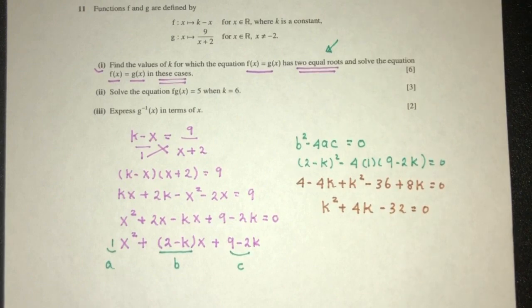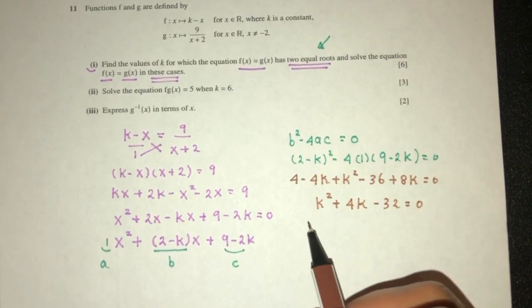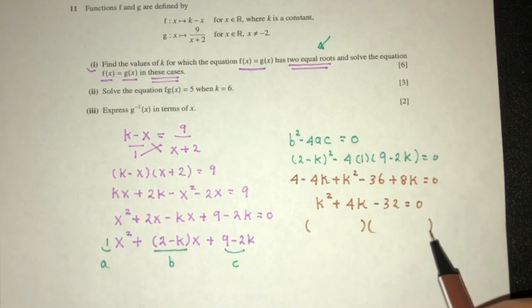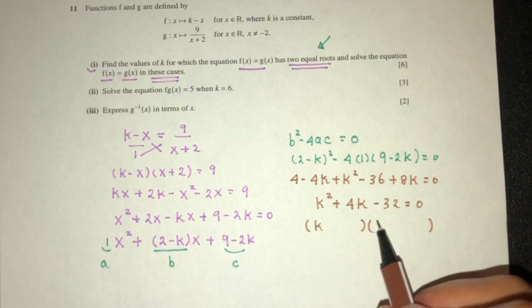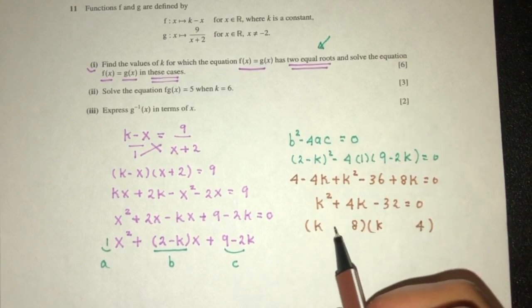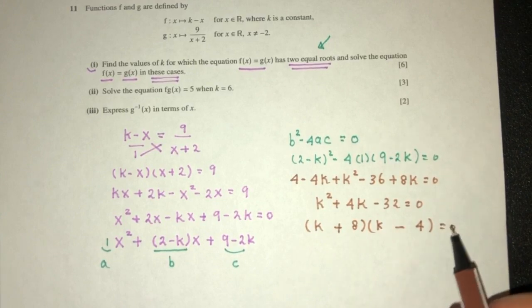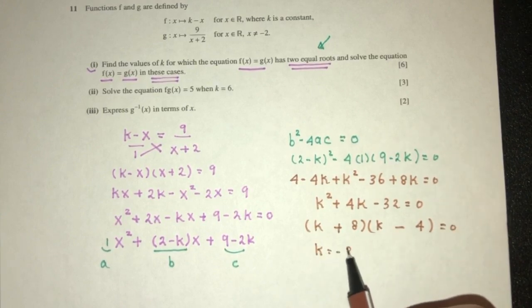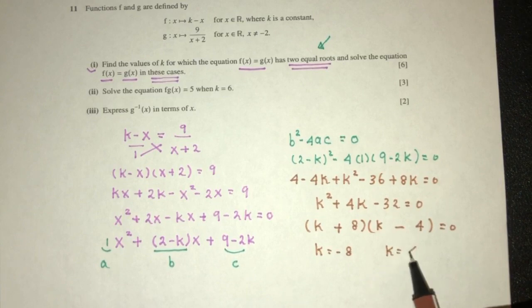So now again, we have a quadratic equation to hopefully find two values of k. So factorize, you will have (k + 8)(k - 4). So k can be equal to -8, and k can be equal to 4.